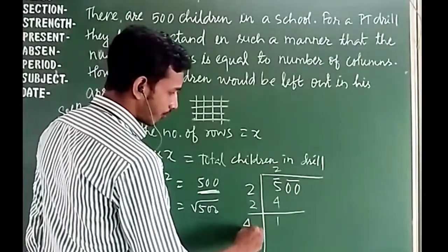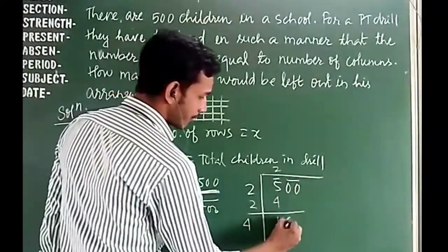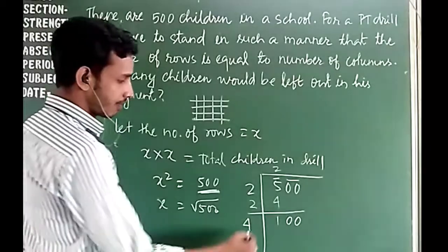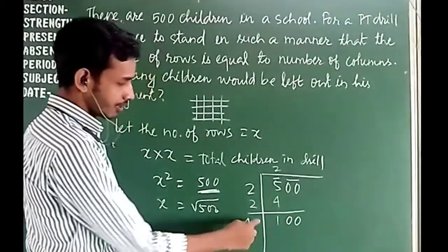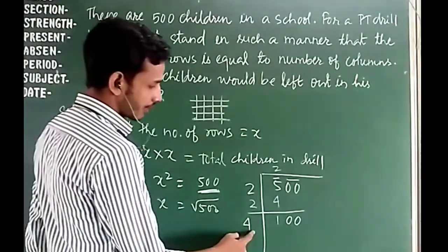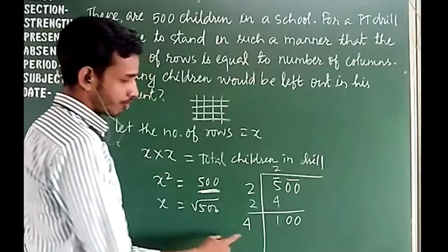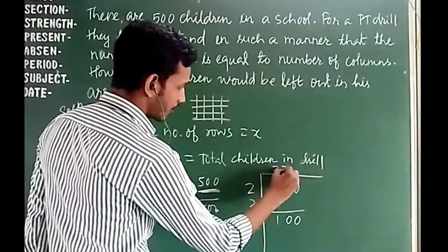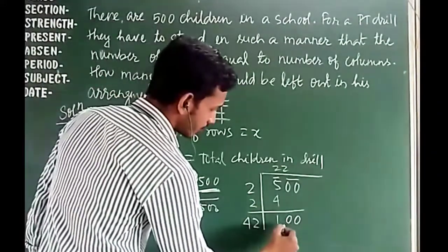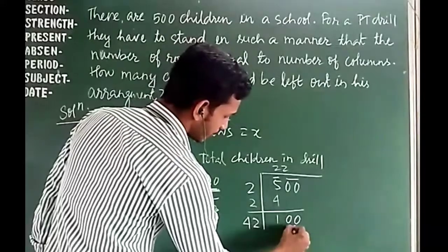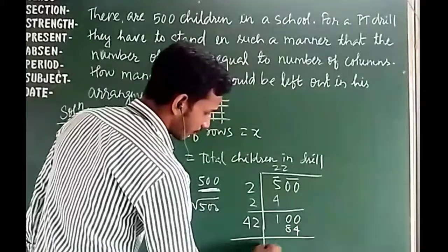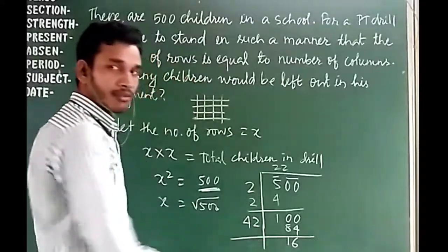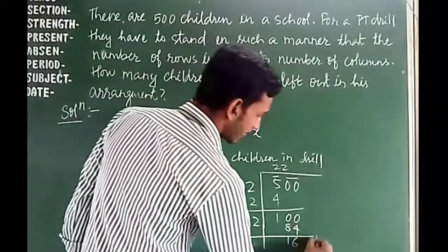We double 2 to get 4, then bring down 00, giving us 100. We try 42×2 = 84, so the next digit is 2. The remainder is 100 − 84 = 16. Then bringing down the remaining digits, the final remainder is 16, but accounting for the full number the remainder is 60.